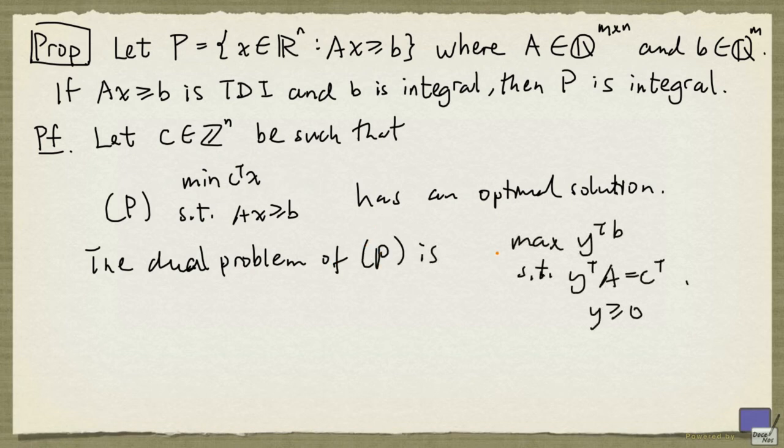We know from linear programming duality that the optimal value for the dual is the same as the optimal value of P. But because Ax greater than or equal to b is TDI, we can find an optimal solution to the dual problem with only integer entries. But b has only integer entries, so y transpose b is going to be an integer. And so the optimal value is an integer.